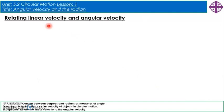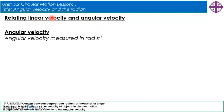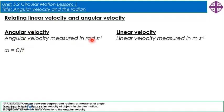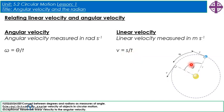Now we're going to relate linear velocity and angular velocity. Angular velocity is measured in radians per second, and linear velocity in metres per second. Angular velocity is omega; linear velocity is v. Angular velocity is theta divided by t, and linear velocity is displacement divided by t.